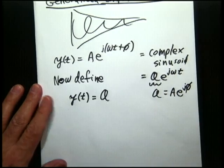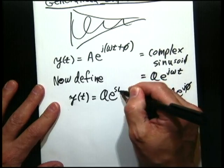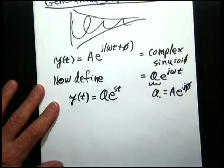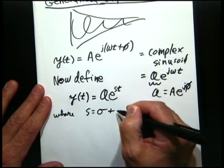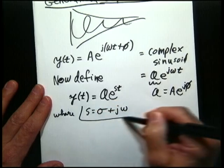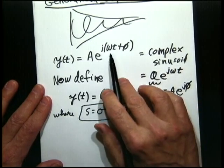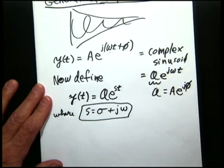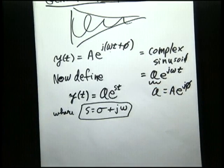And that's what script A is doing. Now we want to define A times e to the st, where s equals sigma plus j omega. And that's the new thing. Relative to complex sinusoids, which have purely imaginary exponents, now we're allowing a real part to that exponent. What's that going to do? It's going to give us an exponential envelope. It's going to introduce an exponential decay.